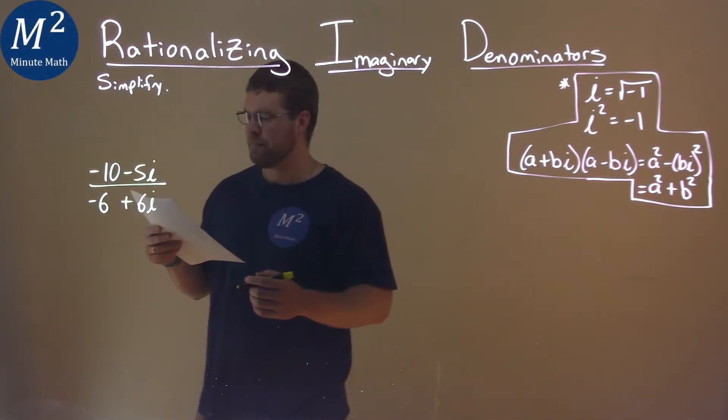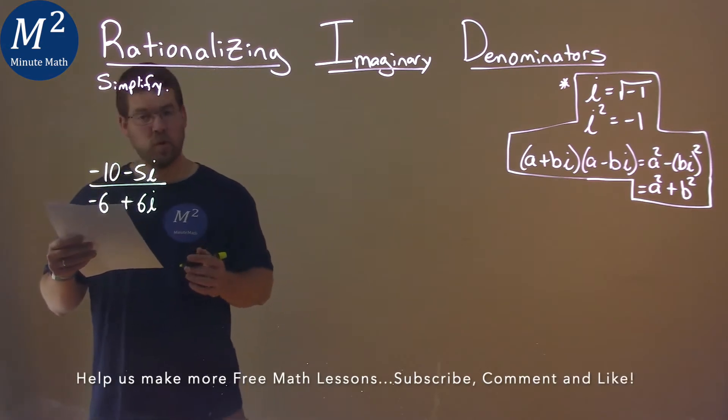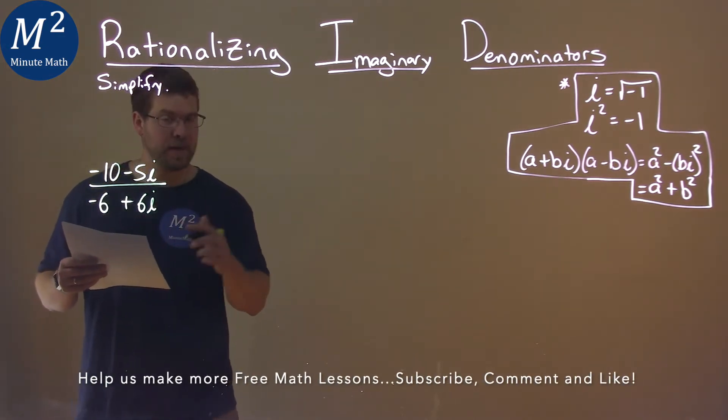We're given this problem right here: negative 10 minus 5i over negative 6 plus 6i, and we've got to simplify.